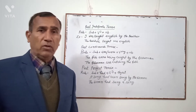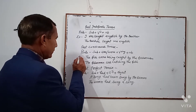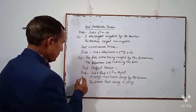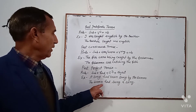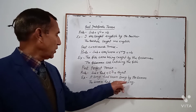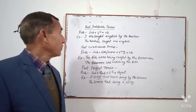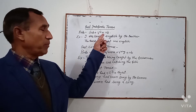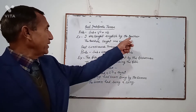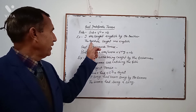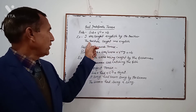Past Perfect Tense. Rule: Subject + had + V3 + Object. Example: 'A song had been sung by the woman.' The woman will be subject. According to the rule: had + V3 'sung' + object 'a song'. So: 'The woman had sung a song.'